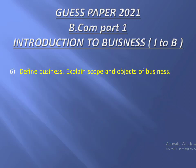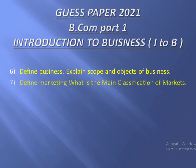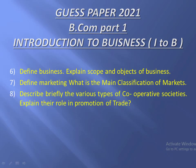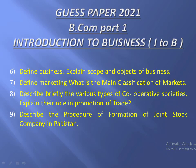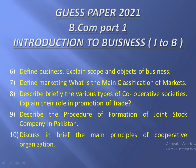Question number six: Define business, explain scope and objects of business. Question number seven: Define marketing, what is the main classification of markets. Question number eight: Describe briefly the various types of cooperative societies, explain their role in promotion of trade. Question number nine: Describe the procedure of formation of giant stock company in Pakistan. Question number ten: Discuss in brief the main principles of cooperative organization.